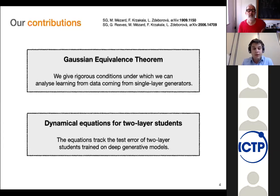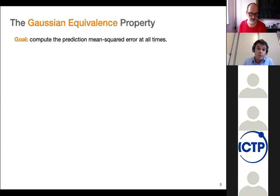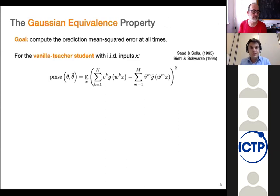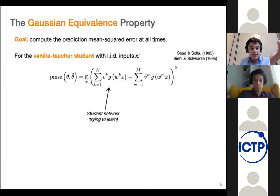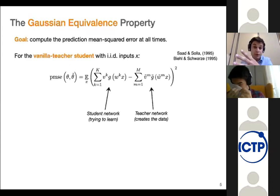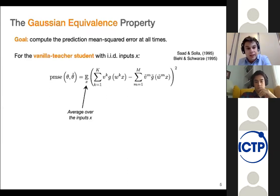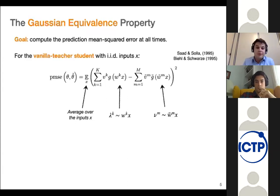Let's start with the Gaussian equivalence theorem. It's good to go back to the classical teacher-student setup where inputs are just IID random inputs. If I say analyze, I mean I want to compute the test error or the prediction mean squared error at all times. In this vanilla teacher-student setup, you can write this prediction mean squared error for a given student — a two-layer network — with respect to the teacher. This is a high-dimensional average over the IID inputs X, but you can simplify it by realizing that the inputs only intervene through the dot products with the teacher and student weights respectively.